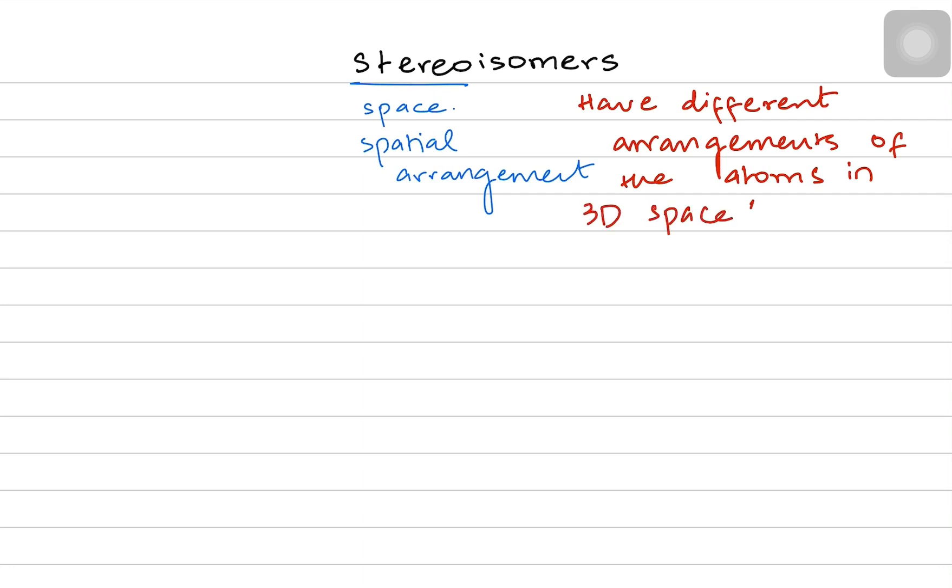You can call it different spatial conformation. Conformation means the overall 3D structure, not confirmation. We often get confused with these two words. Now we know that stereoisomers are of two kinds. The first is geometrical isomers and the second is optical isomers.